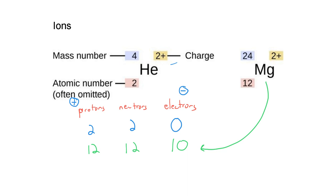So 12 minus 10 gives us that 2. This charge number here we can always get it by doing protons minus the electrons.